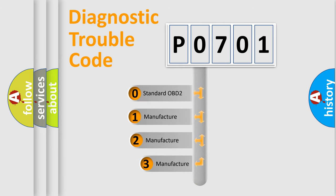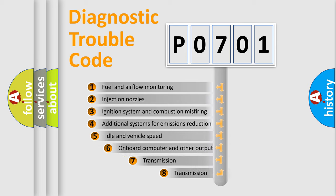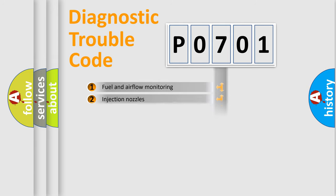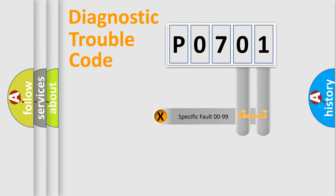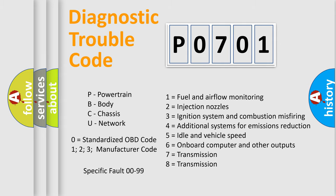If the second character is expressed as 0, it is a standardized error. In the case of numbers 1, 2, 3, it is a manufacturer-specific error. The third character specifies a subset of errors. The distribution shown is valid only for the standardized DTC code. Only the last two characters define the specific fault of the group. Let's not forget that such a division is valid only if the second character code is expressed by the number 0.